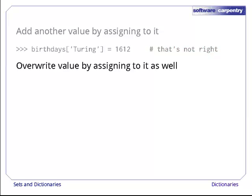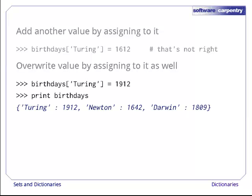Assignment also overwrites values. Since Alan Turing was actually born in 1912, we can fix the mistake in the previous line simply by assigning that value to the key Turing.